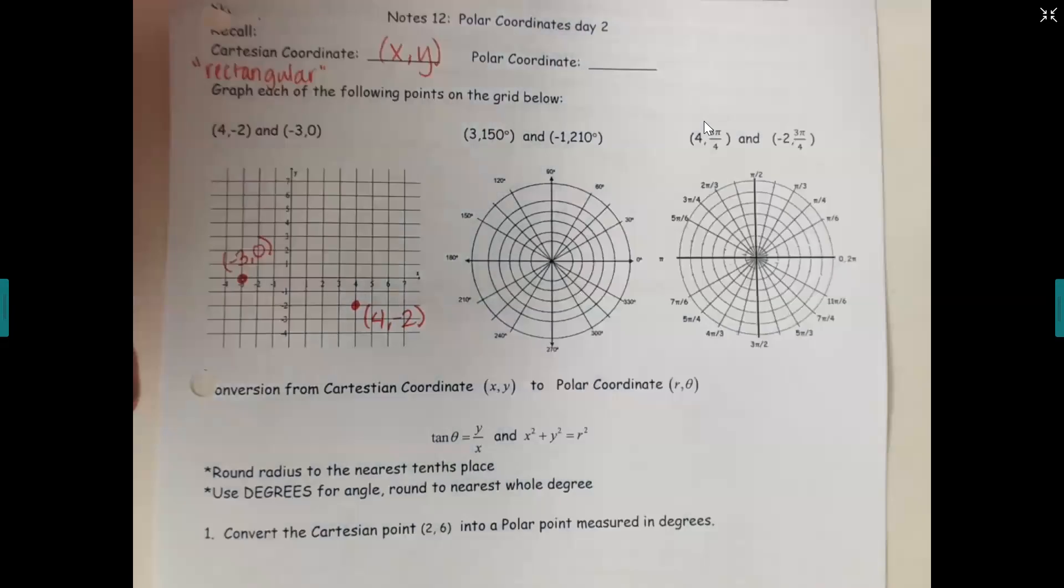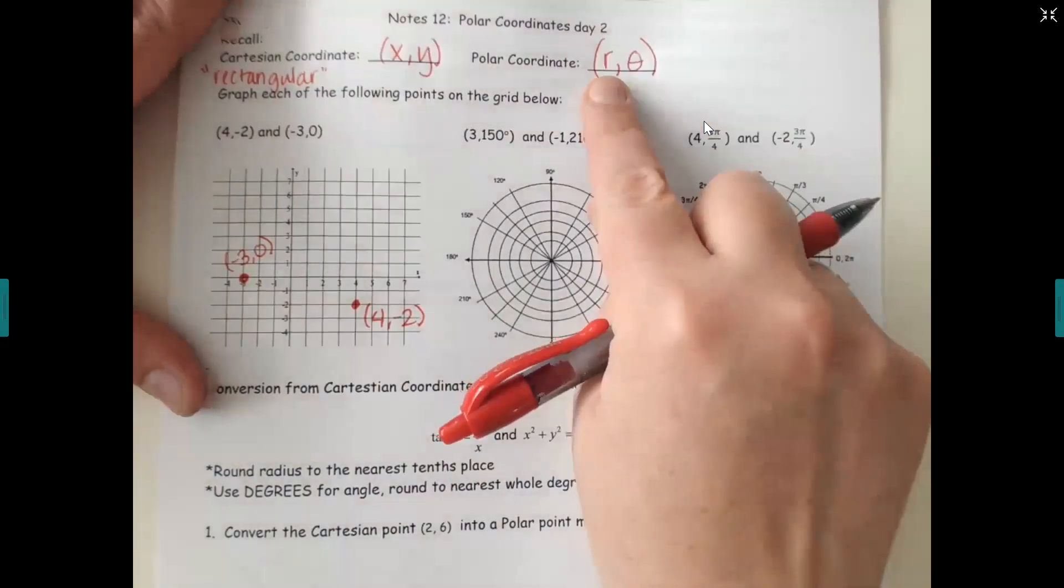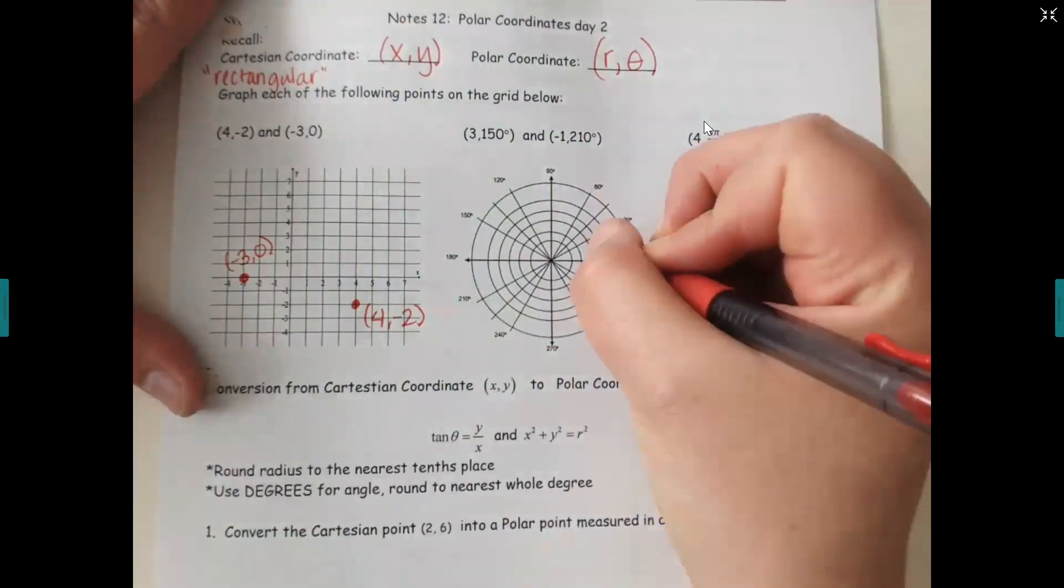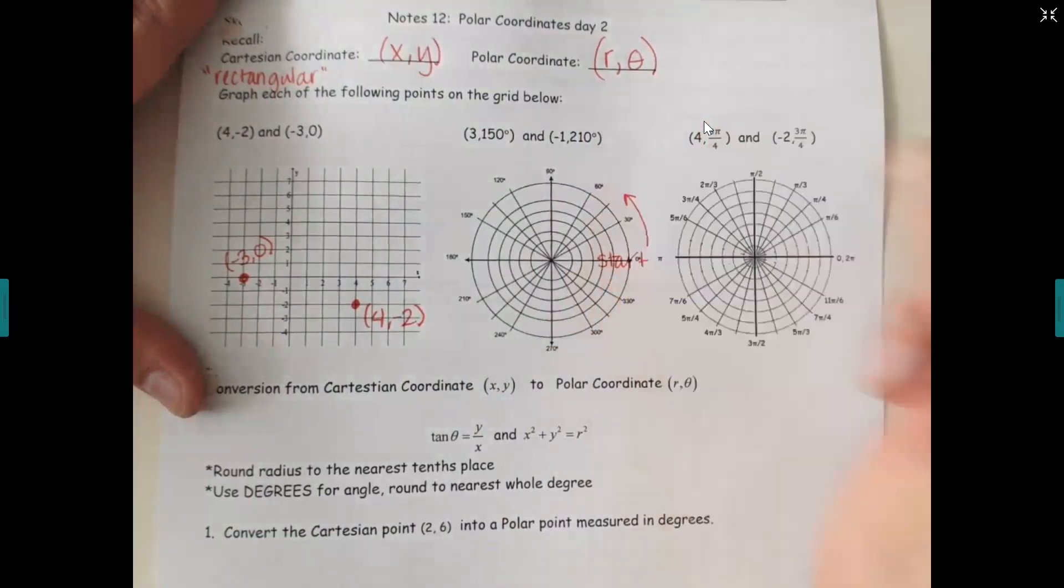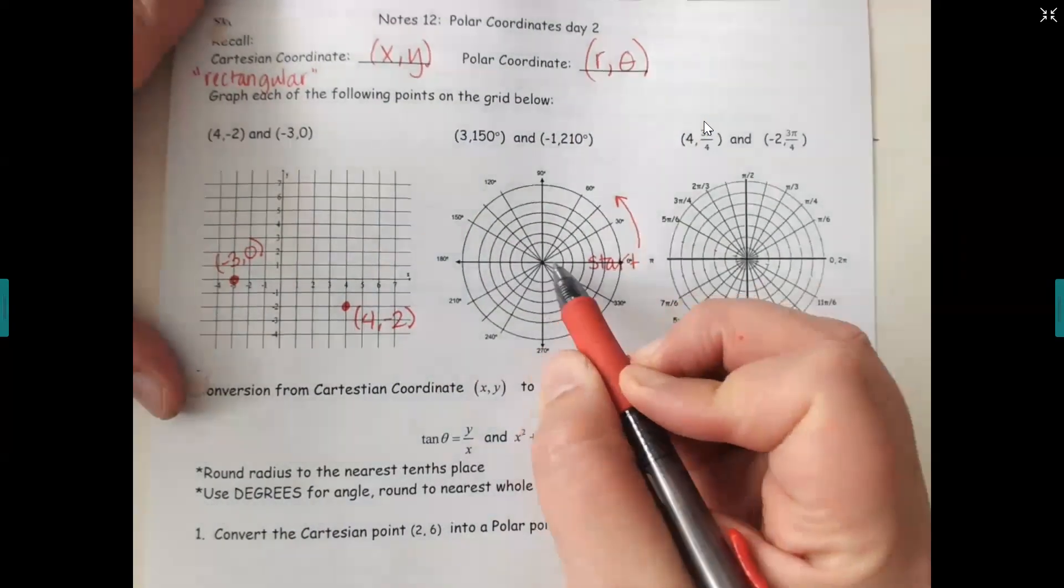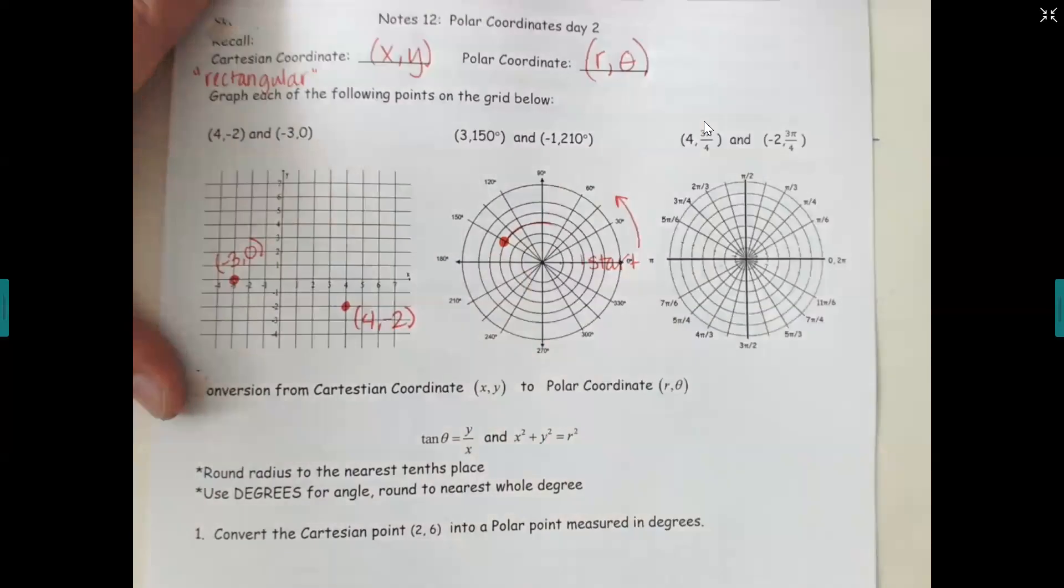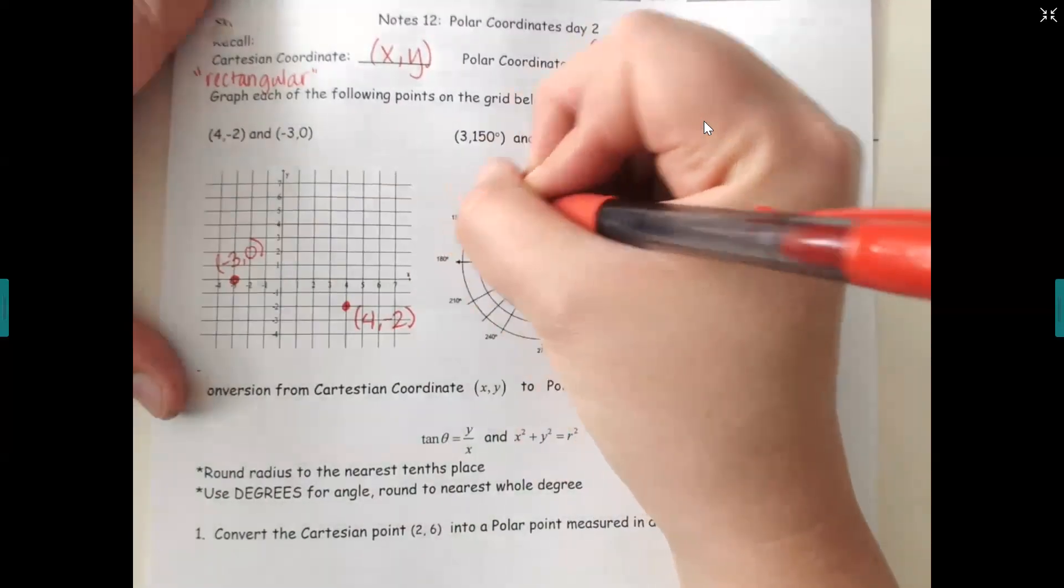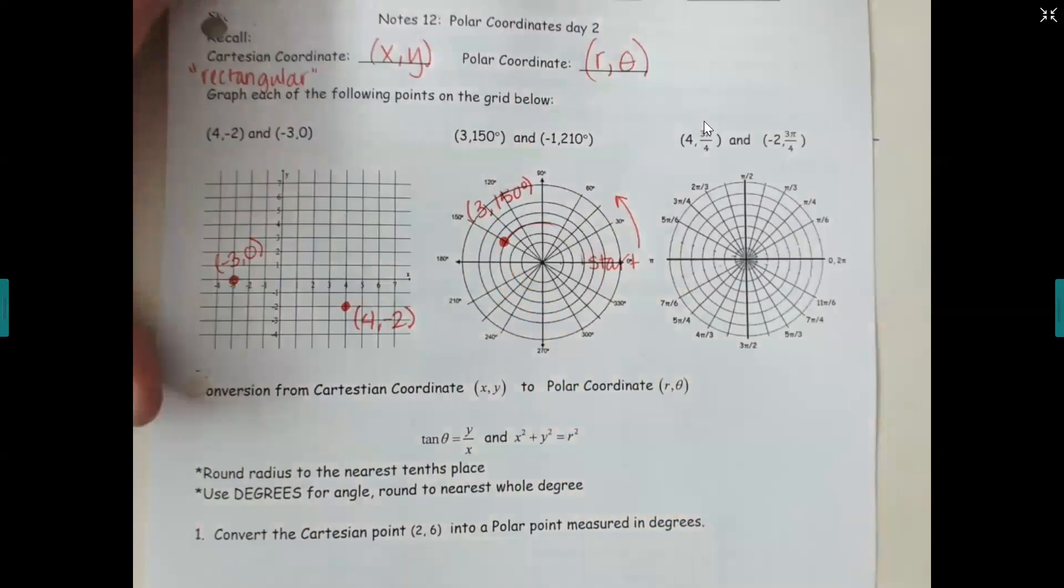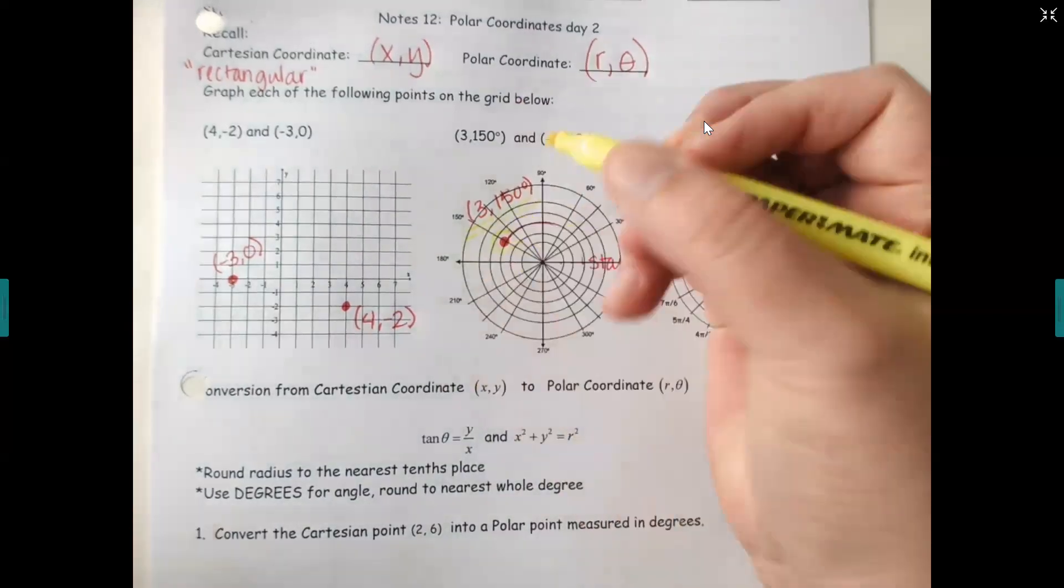Your polar coordinate system, remember that it's an r and a theta. Remember that r is the radius length or what ring you should be on, and then theta is your angle measurement. But remember, you always start from here and then you rotate this way for positive angles. So if I'm doing 3 comma 150, I would go out to the third ring, 1, 2, 3, and then I would follow that around to 150 degrees, which would be here. That would be 3 comma 150.